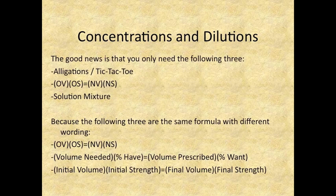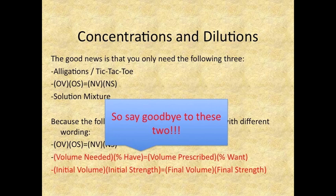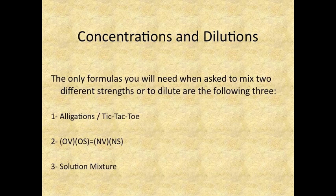The good news is that you only need the following three: allegations or tic-tac-toe, old volume times old strength equals new volume times new strength, and the solution mixture formula — because the following three are the same formula with different wording. So you can say goodbye to those two, the ones in red. The only formulas you will need when asked to mix two different strengths or to dilute are these three.